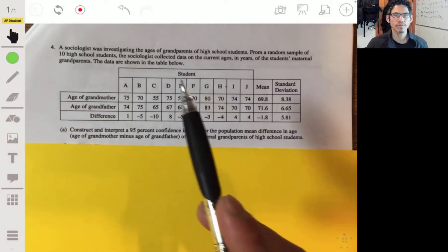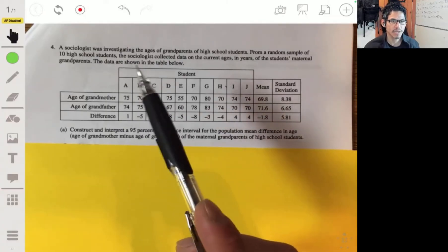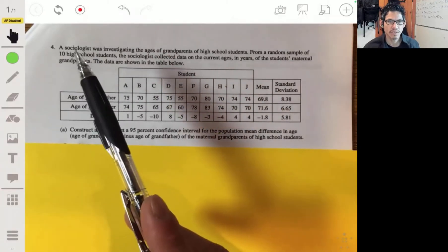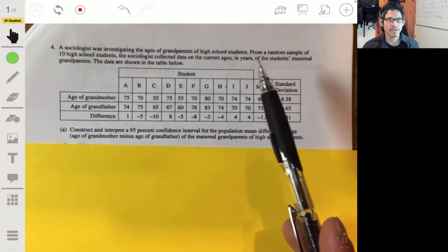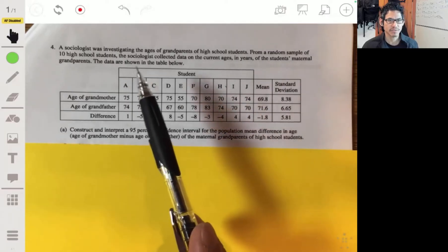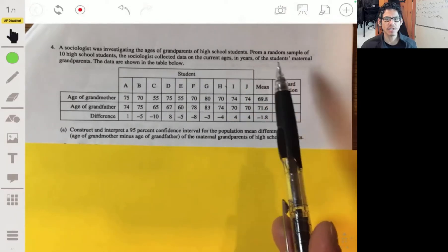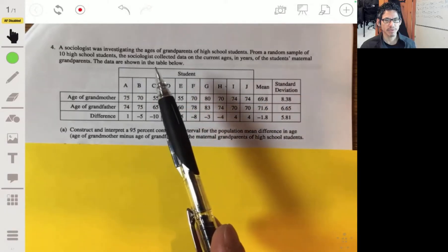All right, free response problem four from the 2017 AP Stats exam. A sociologist was investigating the ages of grandparents of high school students. From a random sample of 10 high school students, a sociologist collected data on the current ages in years of the student's maternal grandparents. The data are shown in this table below.